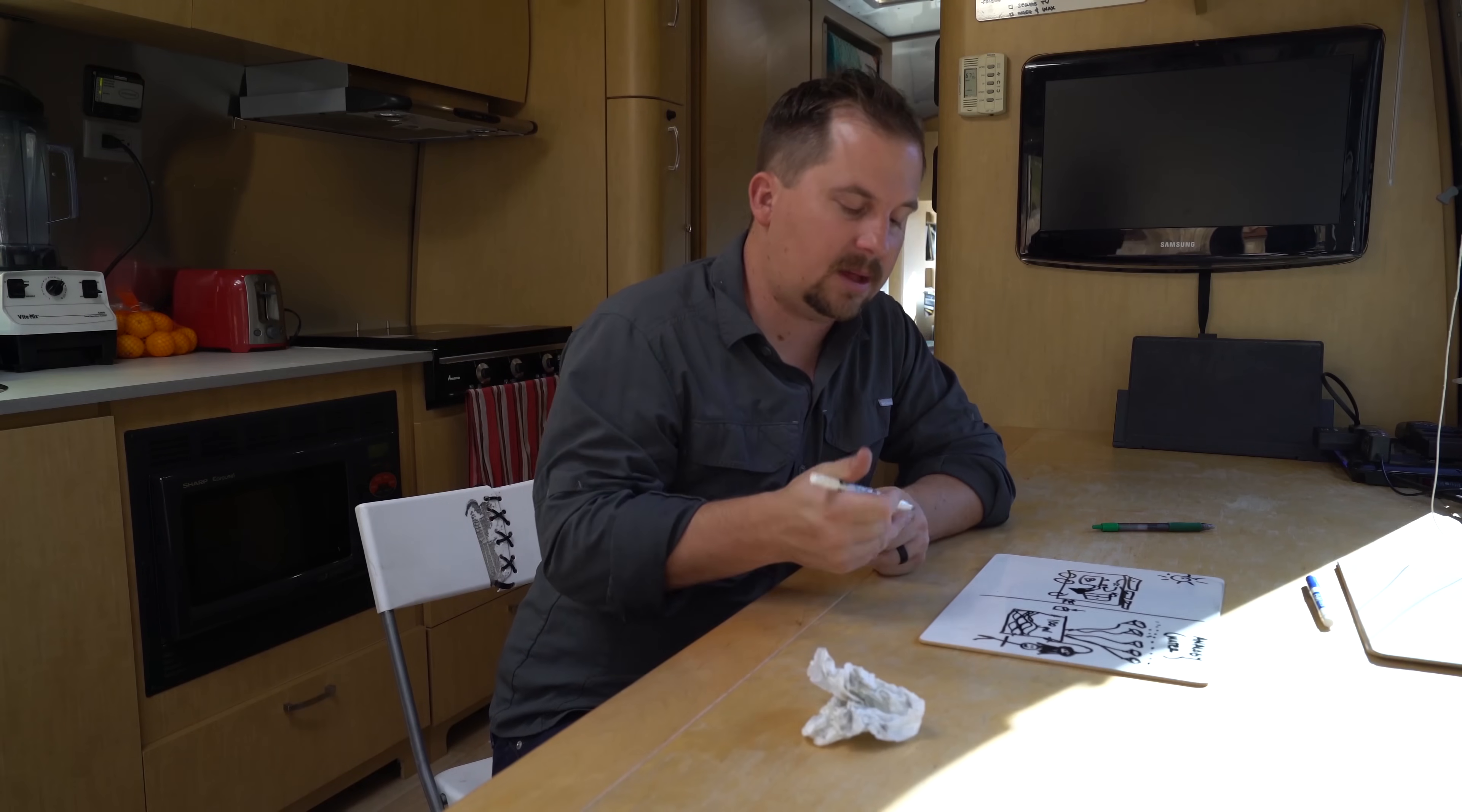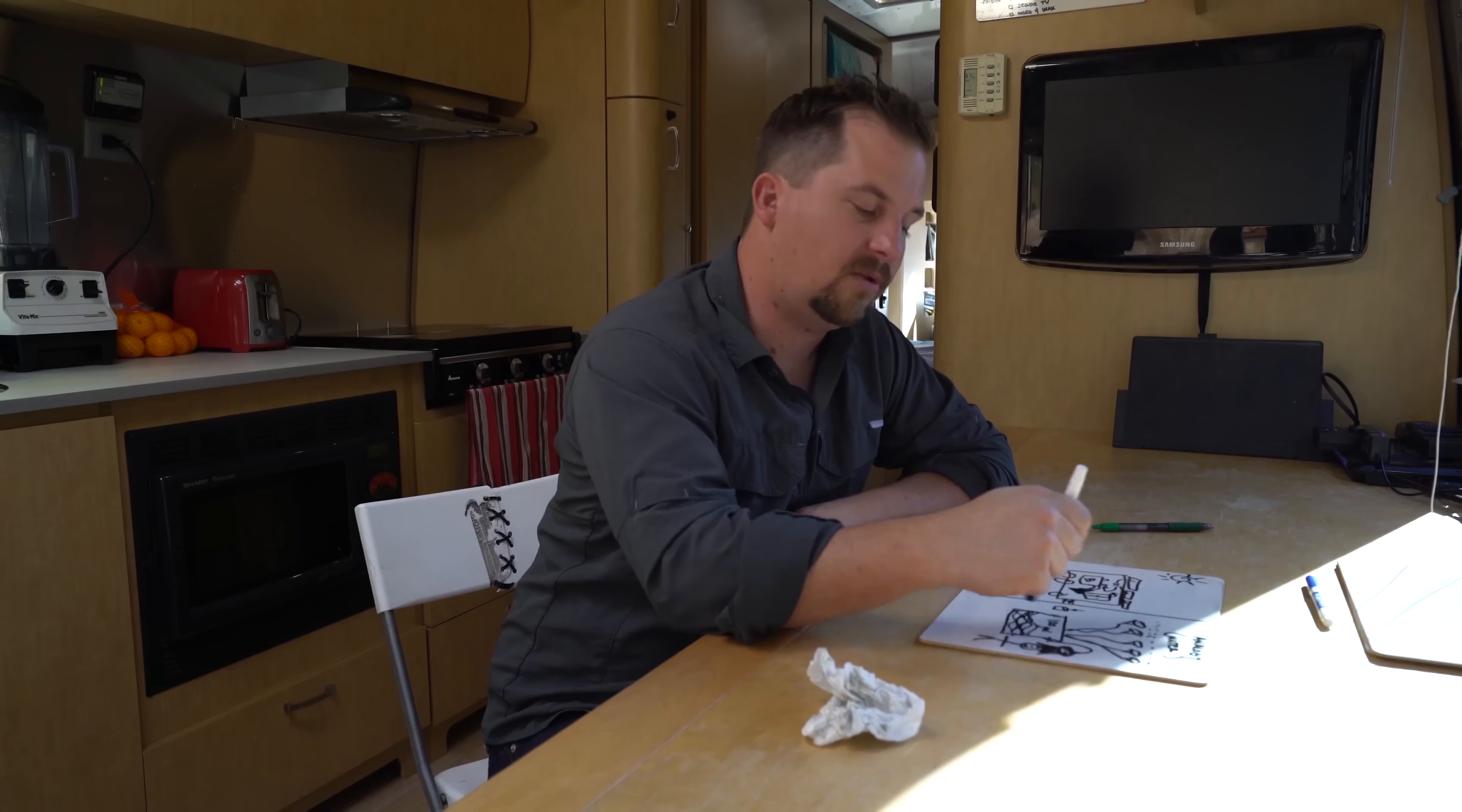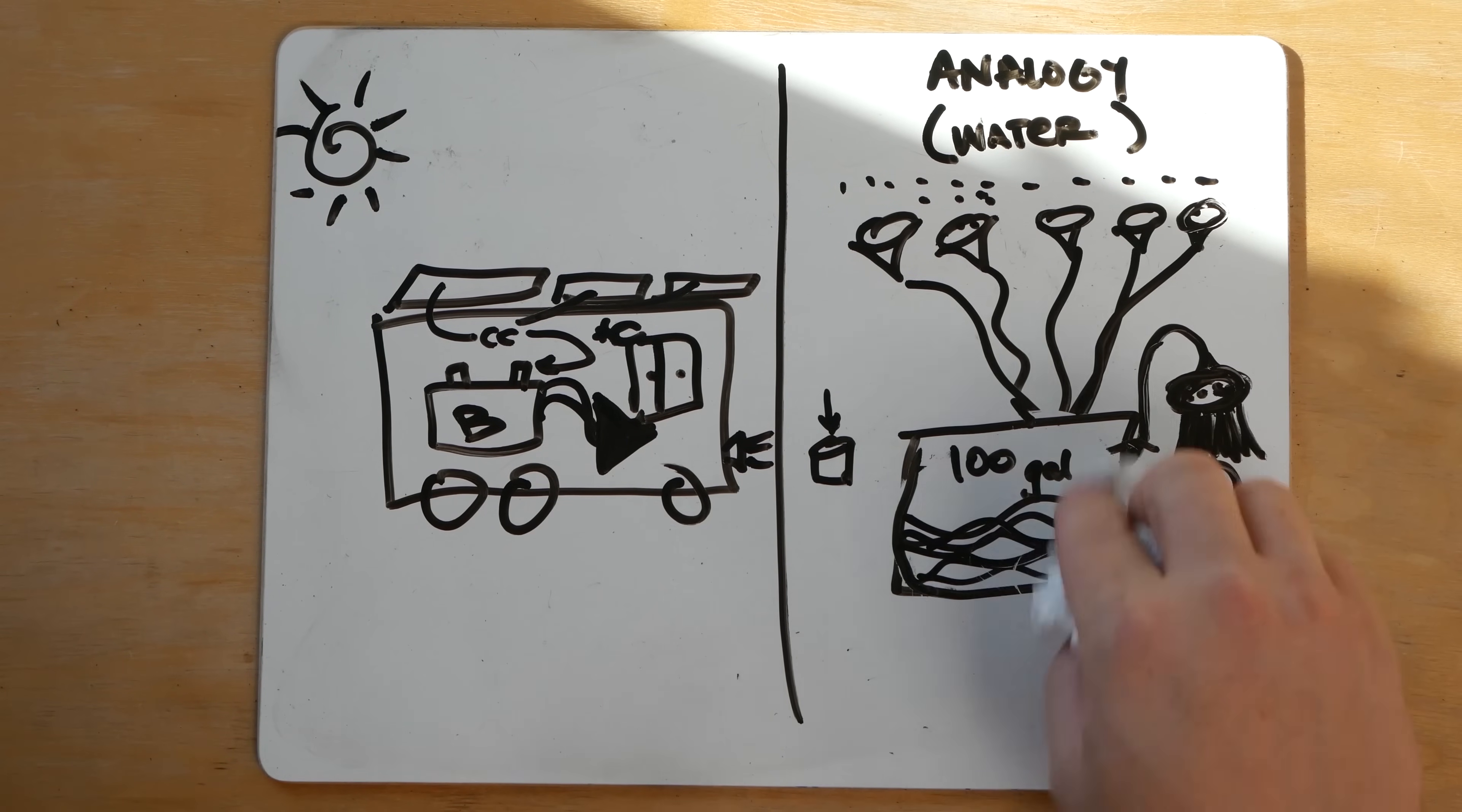So when I hear a lot of people say, oh, just put 10 solar panels on your Airstream. I realized they don't understand this whole battery bank piece. The battery bank is key and we should build our solar system around how much our battery can take. So don't just think that magically buying solar is going to give you unlimited showers as long as you want. It has to incorporate with the battery.